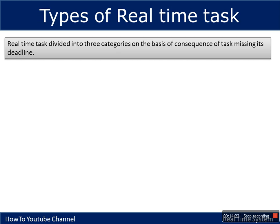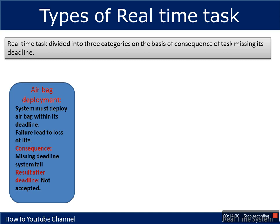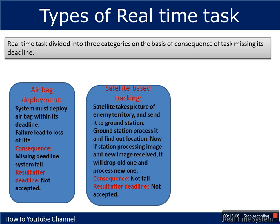Now let's look at the types of real-time systems. These categories are determined based on examples. For the airbag deployment system, if it misses its deadline, the system will be considered failed and any result produced after that time is not accepted — there is no use for a late result.